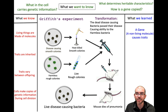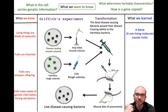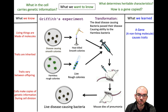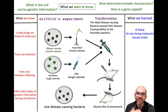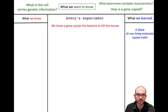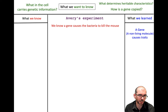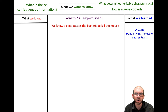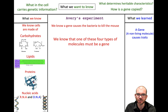What did we learn from this? It showed that there's some non-living molecule that causes traits. There's some non-living thing from the dead smooth colonies that was transferred to the living ones that caused their traits to change. Next up is Avery's experiment. Avery wanted to know how this gene — this non-living molecule — was able to change the bacteria that killed the mouse.